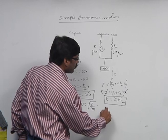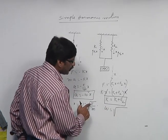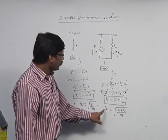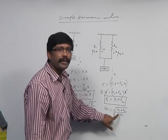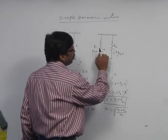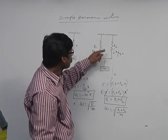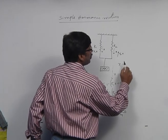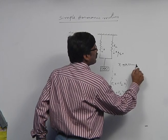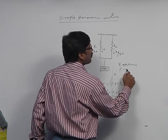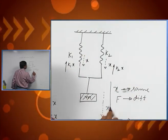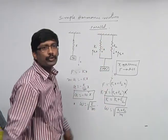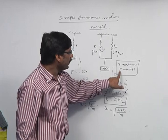When two springs are connected in parallel, the effective spring constant is k1 plus k2, and the angular frequency omega equals the square root of (k1 plus k2) by M. The condition for parallel connection is that both springs have the same extension or compression x, while the restoring forces developed are different.